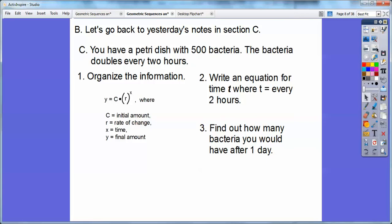You have a petri dish of 500 bacteria. This is my starting number, so this would be the initial amount. That would be the C. And it doubles every two hours. So if it doubles, then the R is going to be two. So this double part means times two.